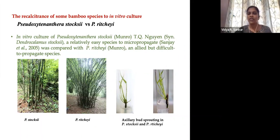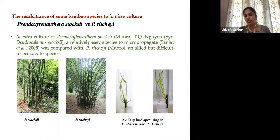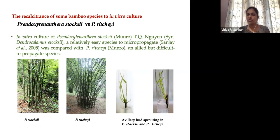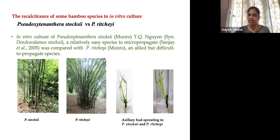We tried to establish a protocol for ritchiei but found that this is a bit recalcitrant in many aspects. The first issue is that it couldn't give a better sprouting response. When inoculating stocksii, within three to five days we will get a better sprouting response with five to six initial buds. Whereas ritchiei gives a very low sprouting rate.